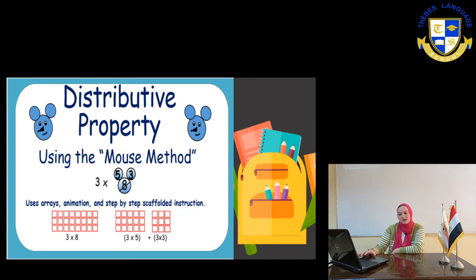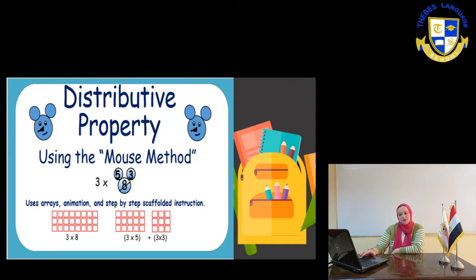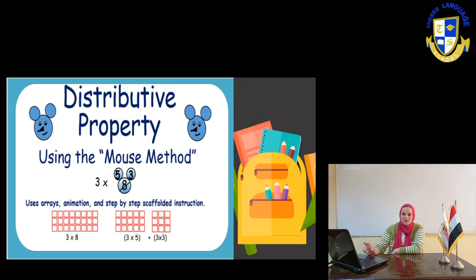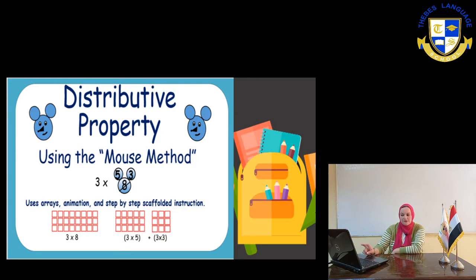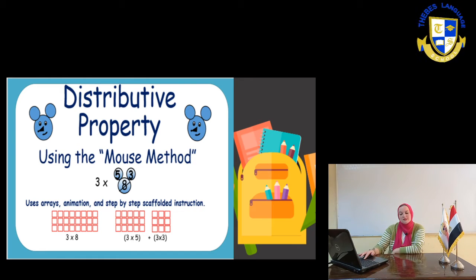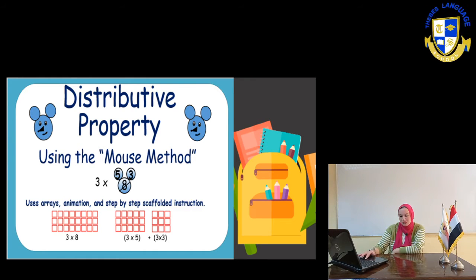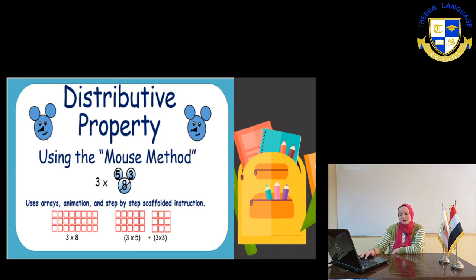Here we have the array. It's 3 times 8. We said before that the 8 can be distributed into two numbers, 5 and 3. So we can break this big array instead of making 3 times 8 into 3 times 5 plus 3 times 3.